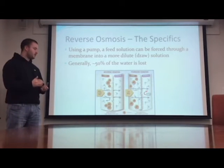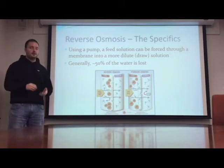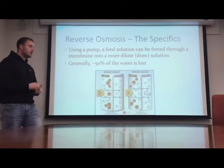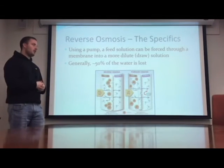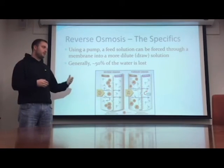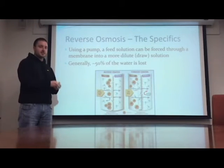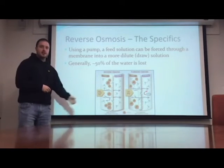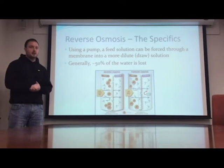Typically, this process requires a pump that can supply between 400 and 1,100 psi. Compared to forward osmosis, which only requires 25 psi, the draw solution in forward osmosis is simply salt water, so dissolved solids still remain. In reverse osmosis, we are left with water that has a very low total dissolved solid count.